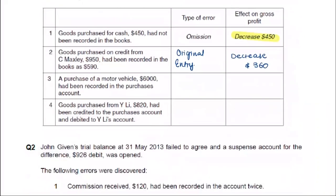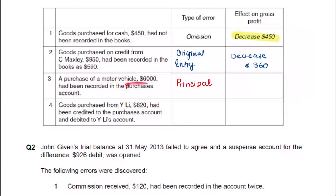Third entry: a purchase of a motor vehicle for 6,000 has been recorded in the purchases account. The motor vehicle should be debited. We have charged the purchase of motor vehicle to purchases. This is an error of principle — we put it in a wrong account and the nature is different. Motor vehicle is an asset; purchases is an expense — different natures. Motor vehicle goes on the Statement of Financial Position; purchases goes on the income statement.